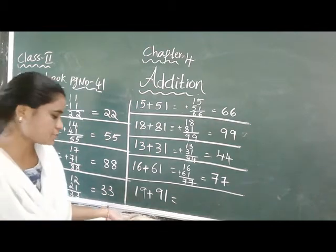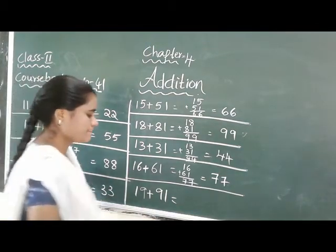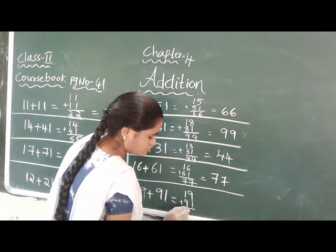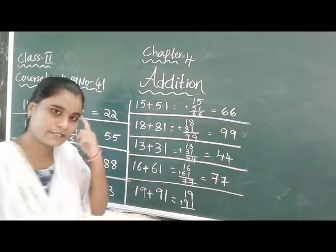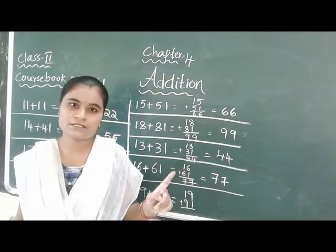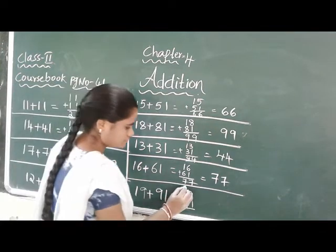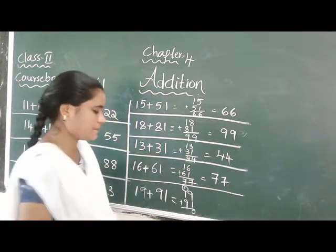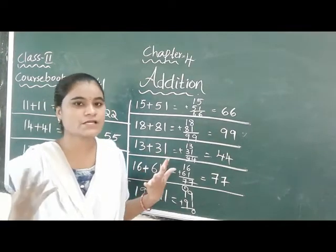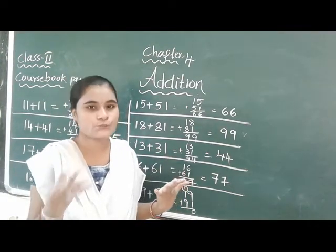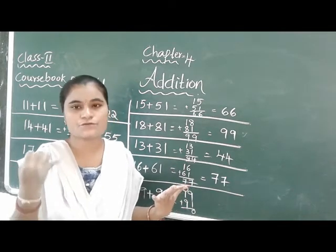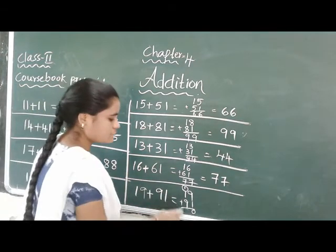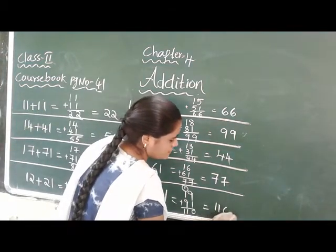Now the last one: 19 plus 91. 9 in the mind, take 1 finger, 9 after 10 - that means 1 here, 0 here. Then 1 in the mind, take 9 fingers, 1 after 2, 3, 4, 5, 6, 7, 8, 9, 10. Ten plus one is eleven - so the answer is 110.